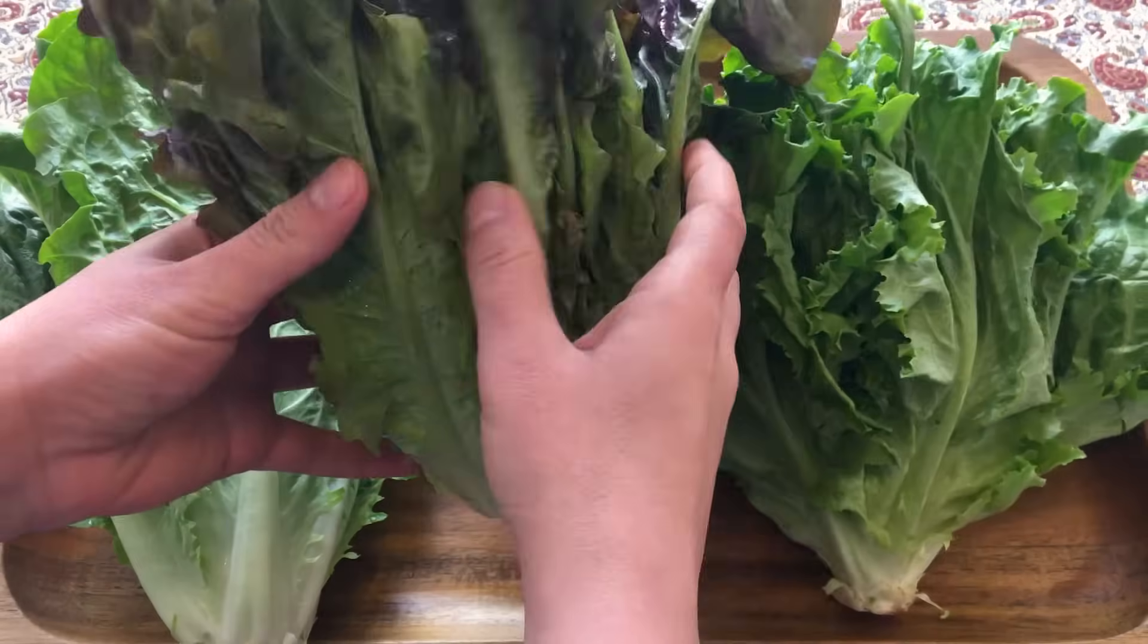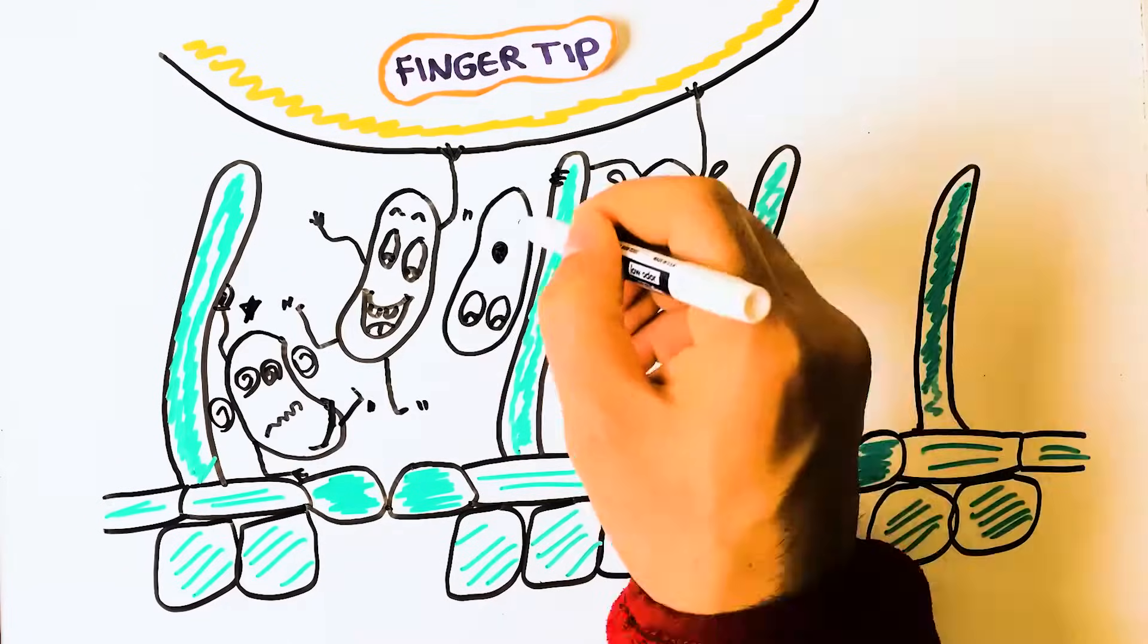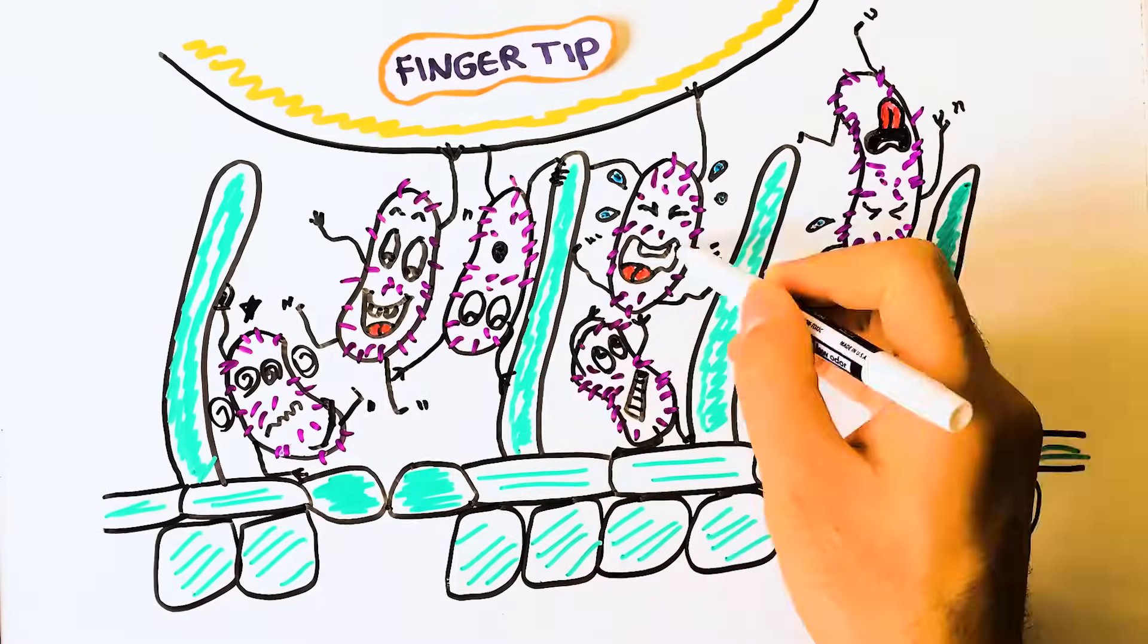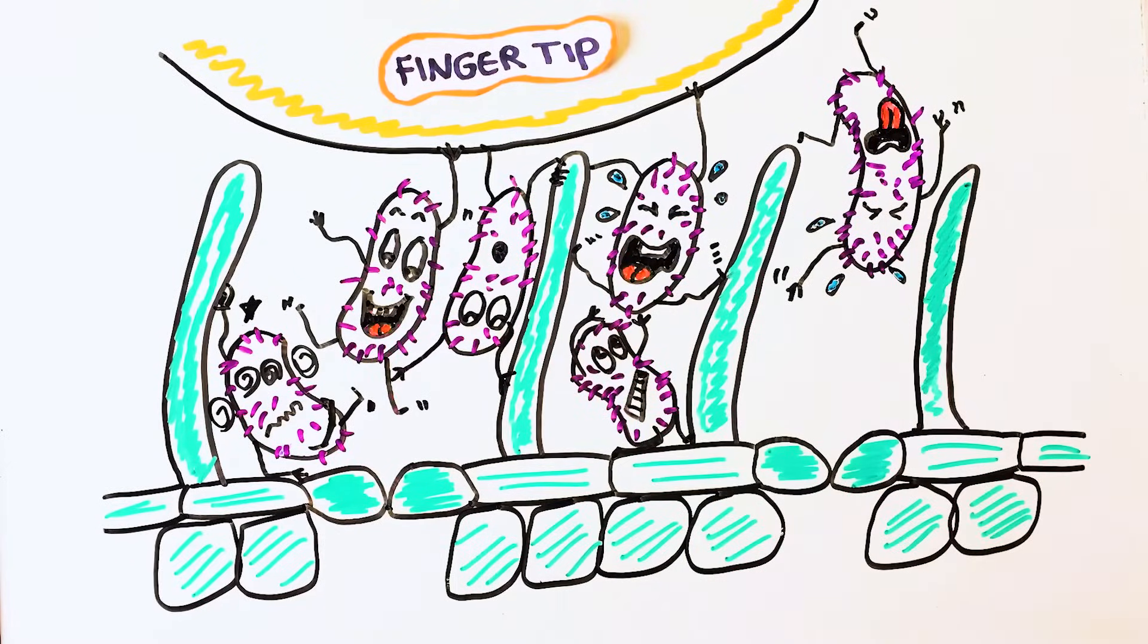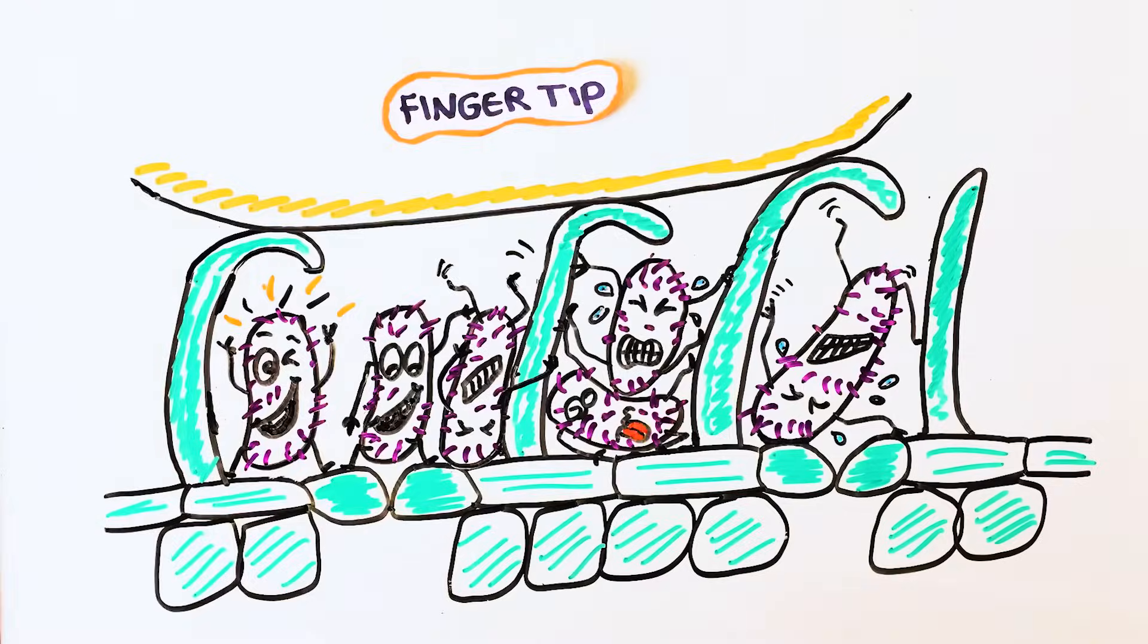When we touch the leafy greens with unwashed hands, we are potentially transferring some harmful bacteria to the surface of the leaf where they can attach to these microstructures and hide in the crevices.